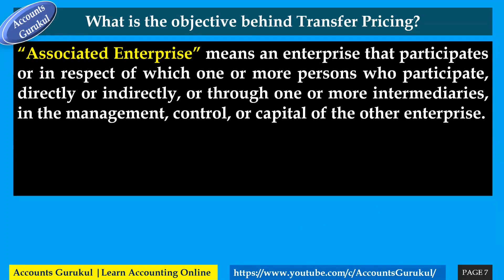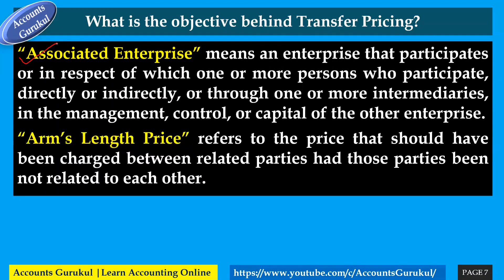Associated Enterprises, or AE, means an enterprise where one or more persons participate directly or indirectly, or through one or more intermediaries, in the management, control, or capital of the other enterprise. In other words, any person with involvement in a business — directly or indirectly — as an intermediary in management, control, or capital of another enterprise qualifies as an associated enterprise.